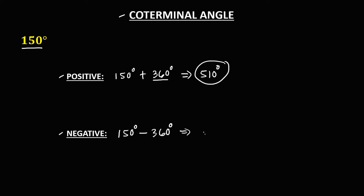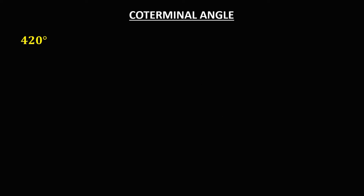For the negative coterminal angle, from the given angle we subtract 360 degrees. So the negative coterminal angle is negative 210 degrees.